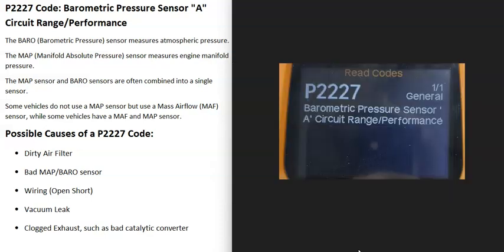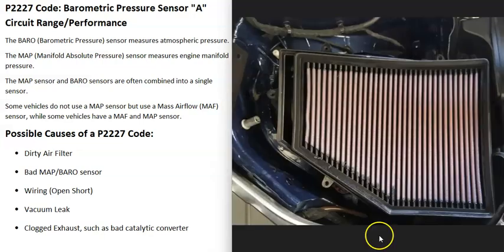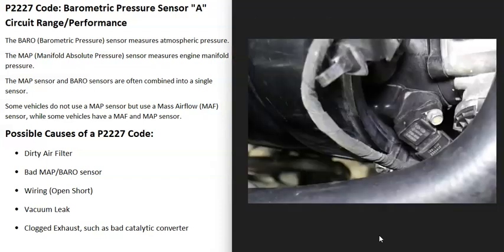The first possible cause of a P2227 code is a dirty air filter. If the filter gets really dirty, it's going to block the airflow going into the engine, cause problems, and throw those sensors off. So the first thing to check is that the air filter looks good.